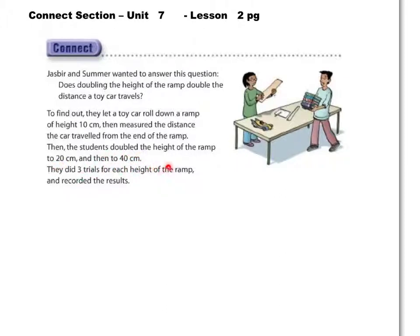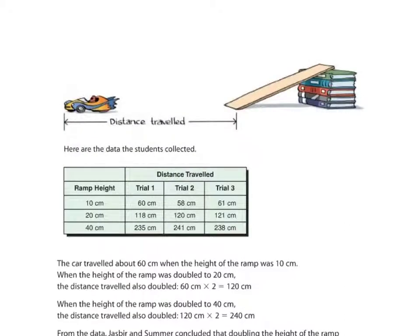They did three trials for each height of the ramp and recorded the results. Now, three trials is a really good idea in case something goes wrong once or twice. Then you can have, between the three, a good set of information so you have a good idea of whether or not the car was traveling properly. So, here we have their results.